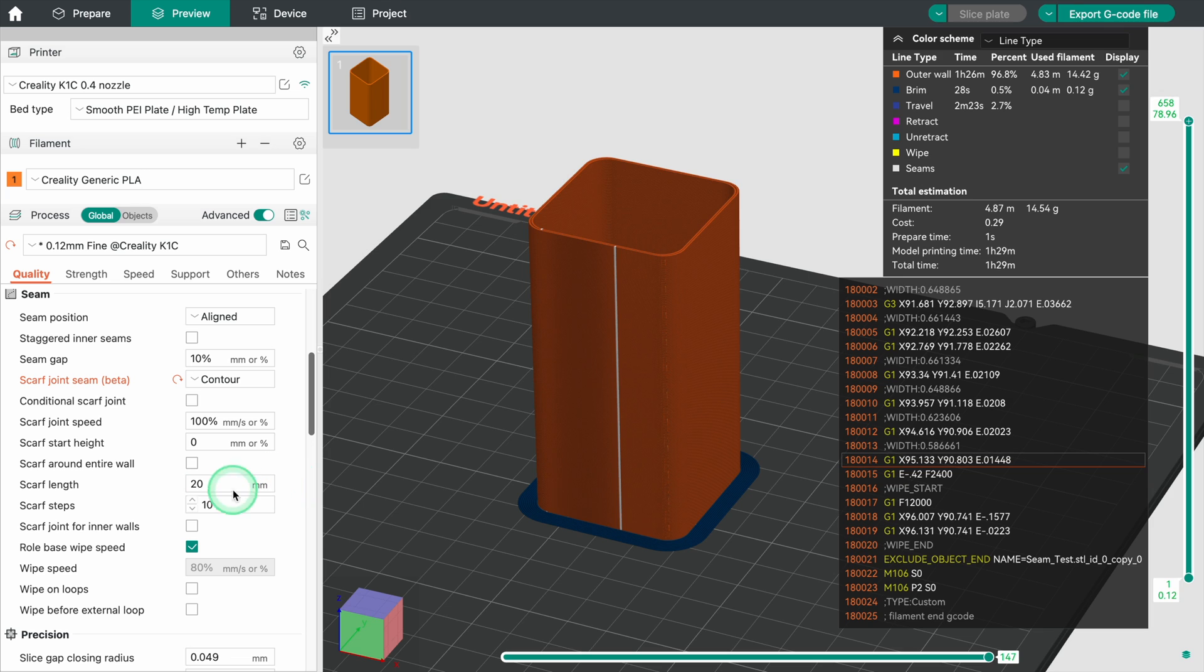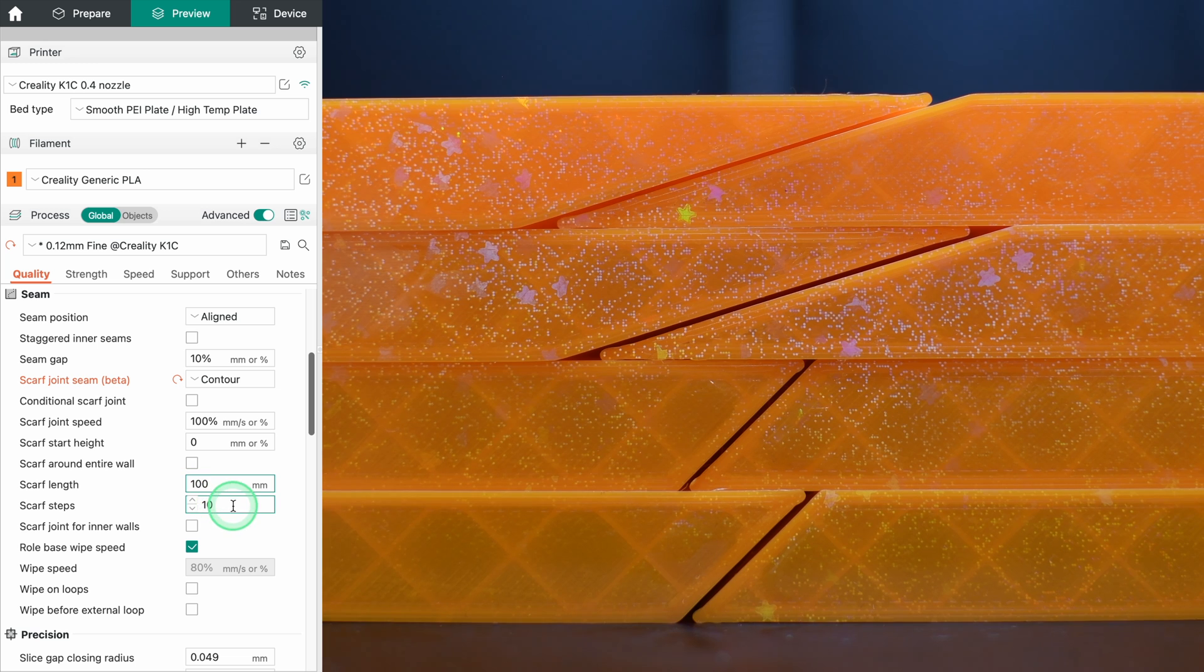The most important settings for this are the length of the seam and the number of steps. The longer the scarf joint seam, the more blurred the seam becomes because it is spread over an increasingly large area.